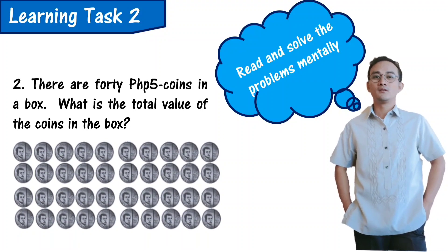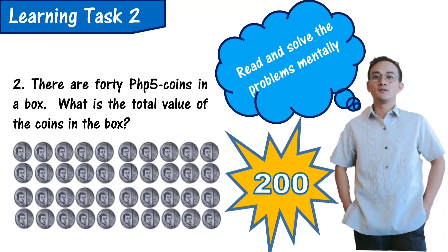Number 2: There are 40 Php5-coins in a box. What is the total value of the coins in the box? Bravo! The total value of coins in the box is 200 pesos.